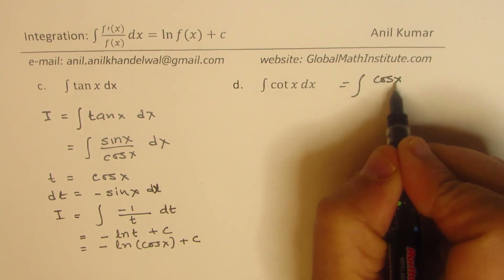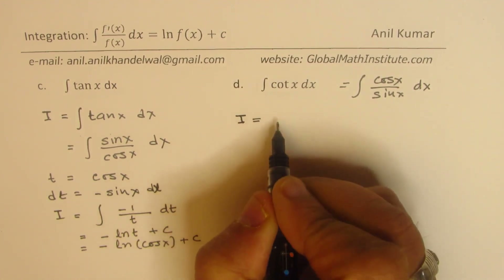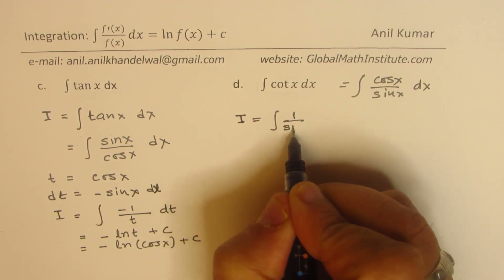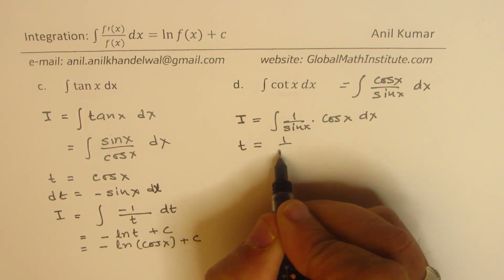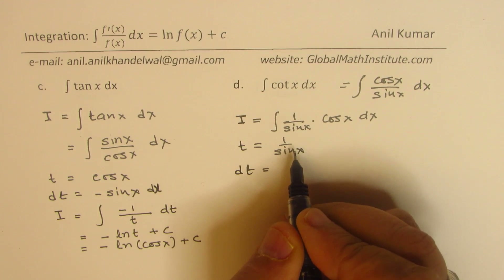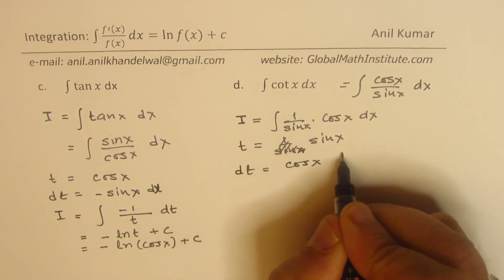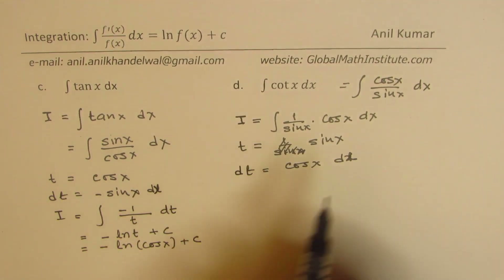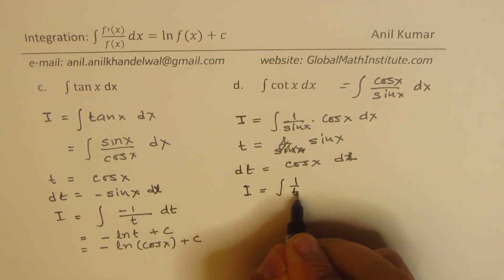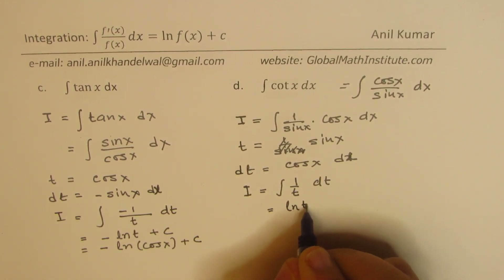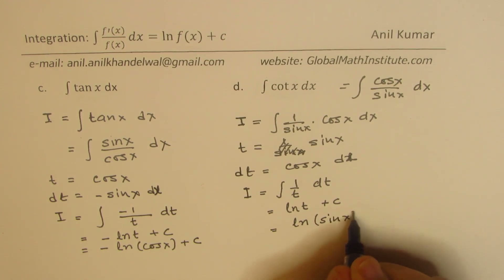Similarly, the integral of cot x can be written as the integral of cos x / sin x dx. We substitute t = sin x, so dt = cos x dx. We can substitute cos x dx with dt and 1/sin x with 1/t, giving the integral of 1/t dt, which equals ln t + c — that is, ln(sin x) + c.